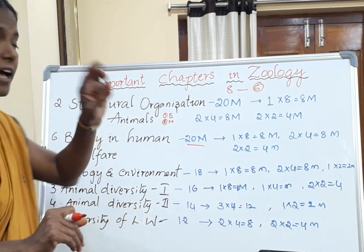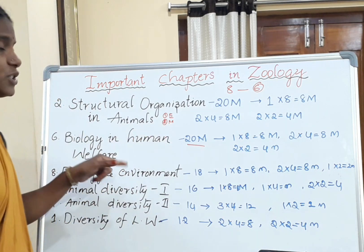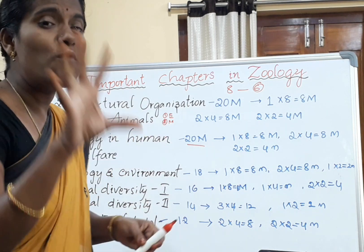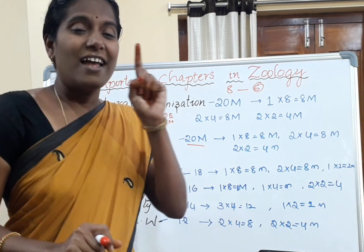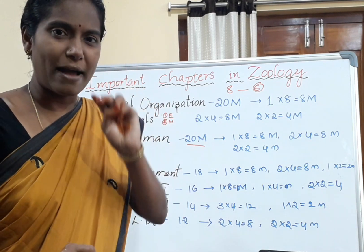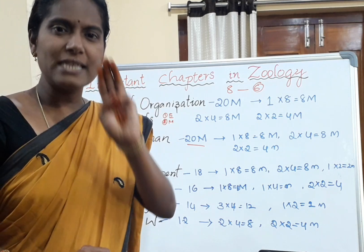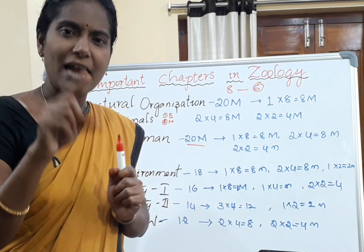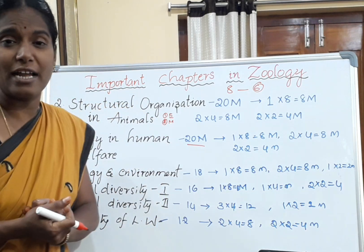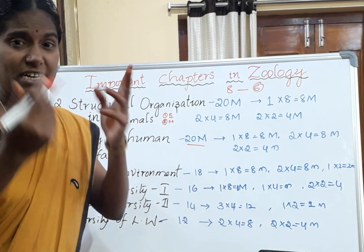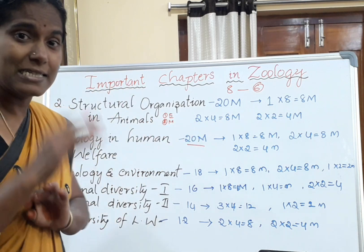For Biology and Human Welfare, you need to study five life cycles. Those are: Entamoeba histolytica, which causes amoebic dysentery; Ascaris lumbricoides; and Plasmodium — the life cycle in man and mosquito. These are the five life cycles you must read. The diagrammatic explanation is very, very important here.